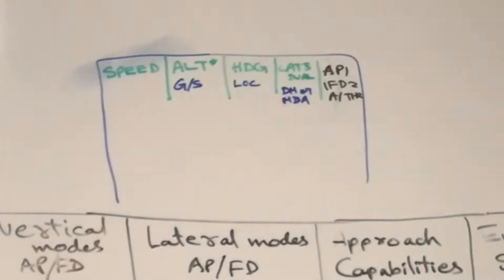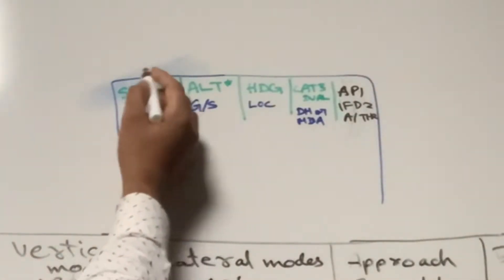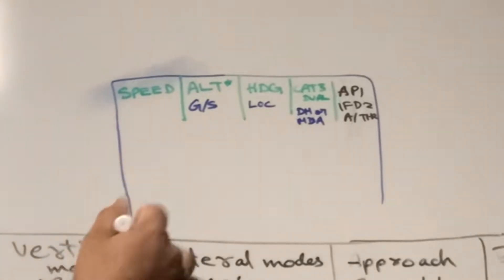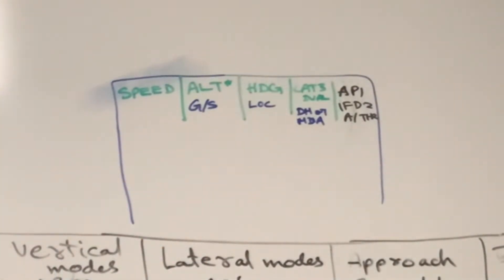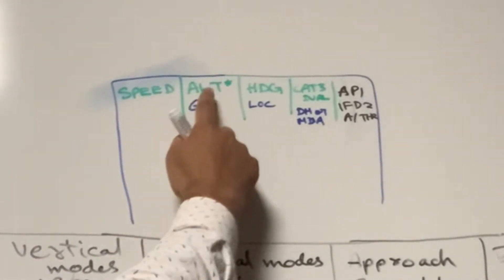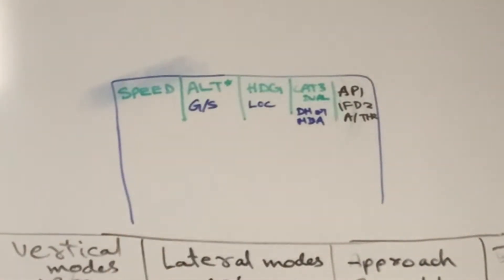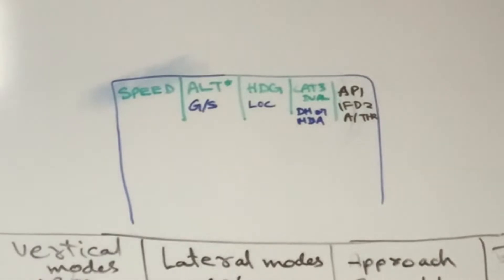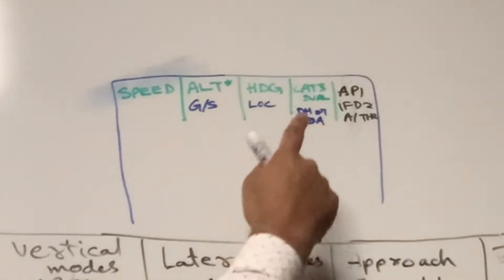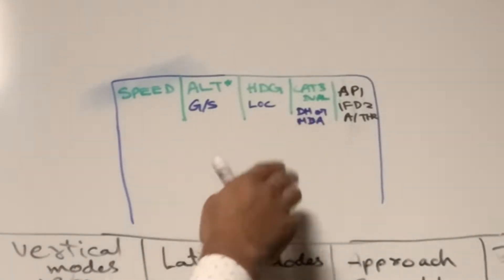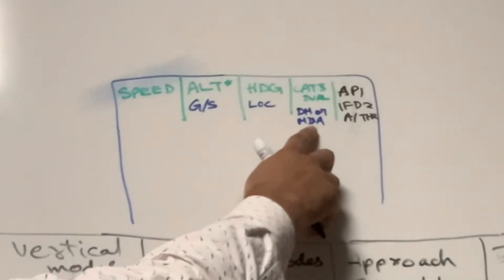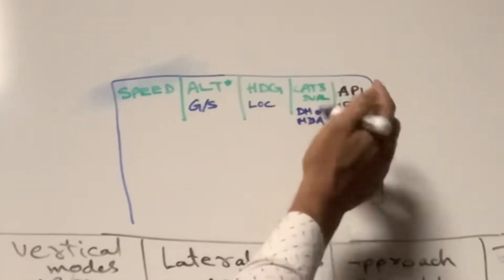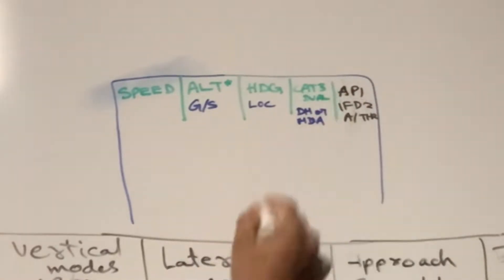So this is how it appears. The first column is showing Speed — the autothrust mode; it can be other autothrust modes like Thrust MCT or Thrust Climb. The second column shows vertical modes like ALT star and Glide Slope. The third column shows lateral modes like Heading and Localizer. The fourth column shows approach capabilities like CAT 3 Dual or CAT 3 Single, and also minimums like DH or MDA. The fifth column shows the engagement status: in this example, Autopilot 1 is on, both FDs are on, and autothrust is active.